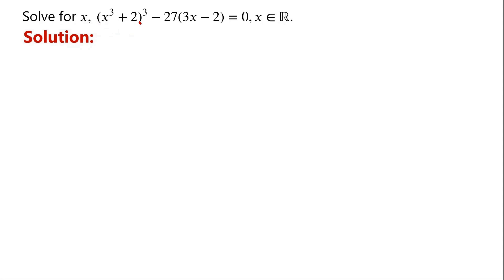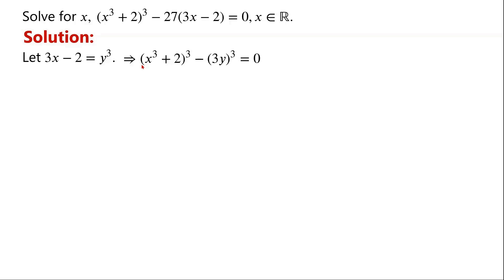This term is something cubed — 27, since 3 is cubed. If 3x minus 2 is also something cubed, then we have a difference of two cubes. We set 3x minus 2 equal to y cubed. Then the given equation becomes x cubed plus 2, or y cubed, minus 3y cubed equals 0.